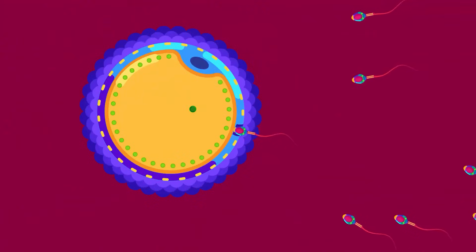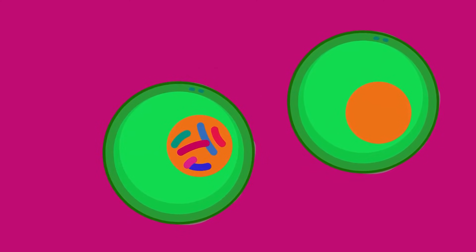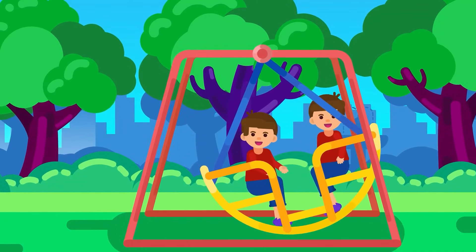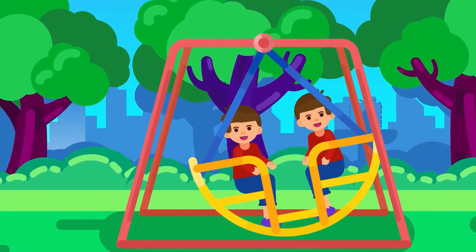Identical twins are produced by one fertilized egg. This egg, or zygote, divides into two cells, each of which develops into a baby. Since the two babies are derived from one fertilized egg, they have the same genes and are identical.